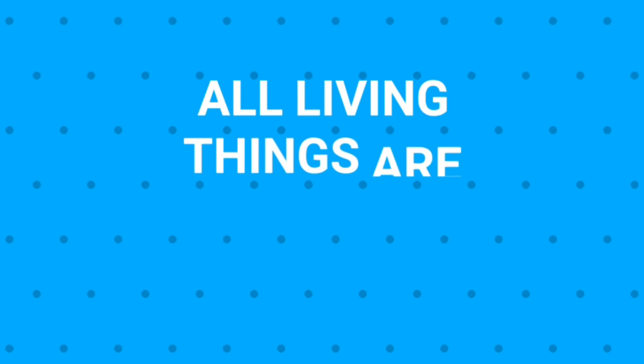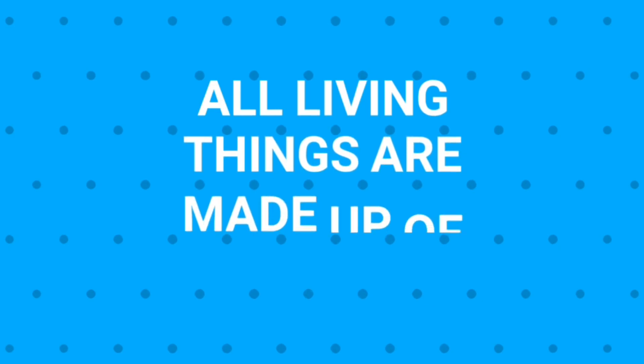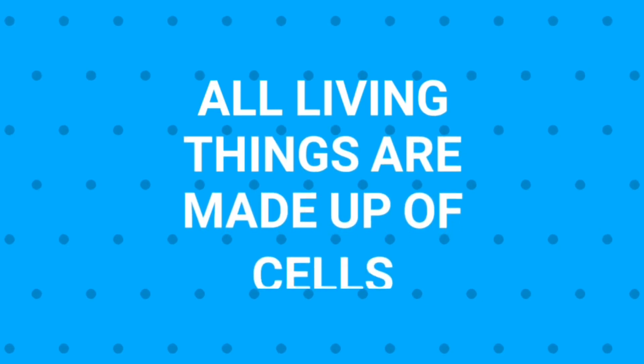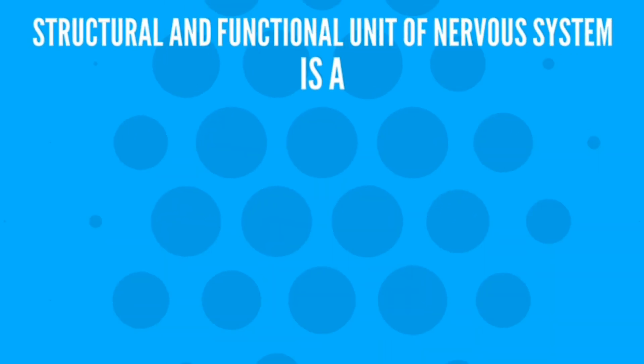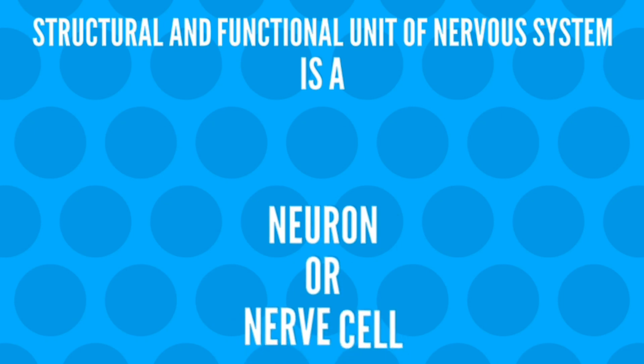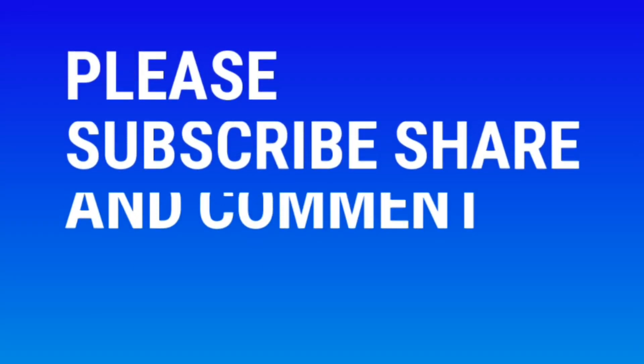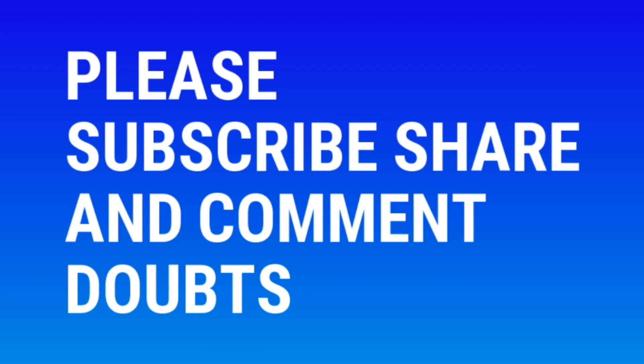Now one more thing. Can you say the structural and functional unit of a living body? Yes, simply you have learned it. It is what we call as a cell. So all living things are made up of minute cells. Obviously, the nervous system is also made up of cells, and that is called a nerve cell or a neuron. Today we are going to study about the structure of a nerve cell or neuron.